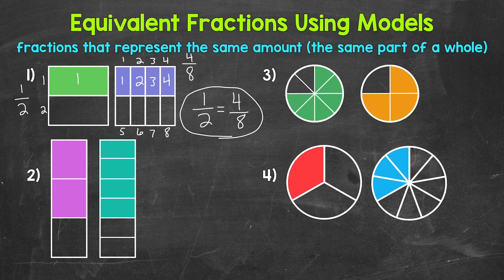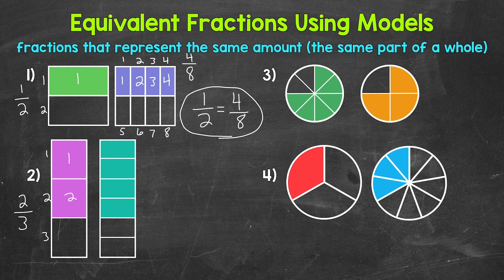Let's move on to number two, where we have two rectangles that are the same size. We can see that the same amount of each rectangle is shaded in, but each of those rectangles has been divided into a different number of equal parts, so we're going to have equivalent fractions here. Let's write out those equivalent fractions. The rectangle on the left has been divided into three equal parts, so three is our denominator. Two parts are shaded in, so two is our numerator. Two thirds of that rectangle is shaded, so that rectangle is representing two thirds.